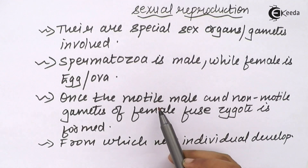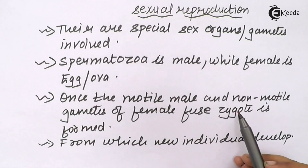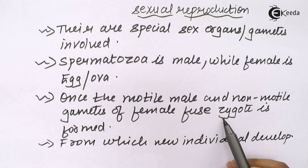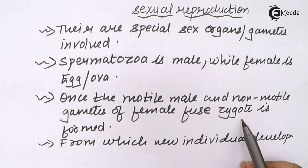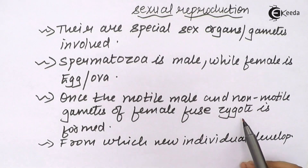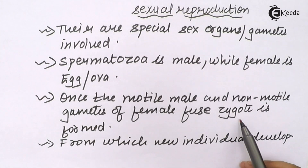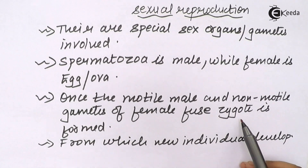Once the motile male gamete and the non-motile female gamete fuse together, the zygote is formed. The sperm is haploid and the ovum is also haploid, whereas the zygote is diploid, which will eventually form a child after the course of eight to nine months.